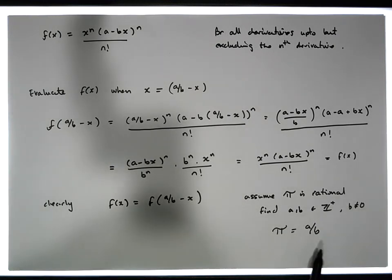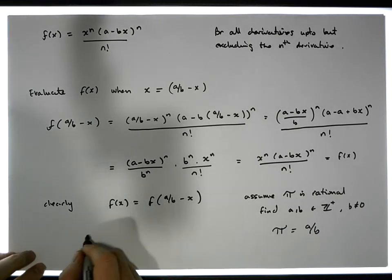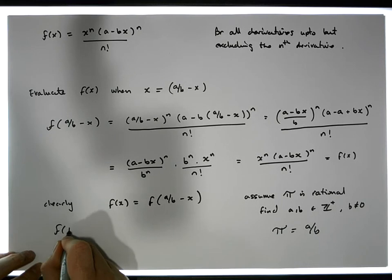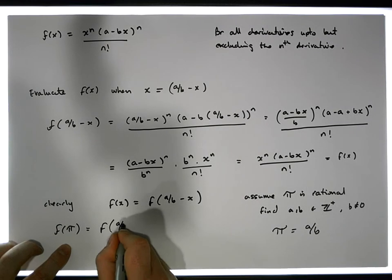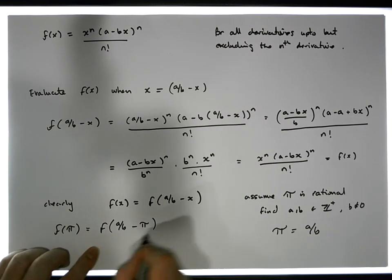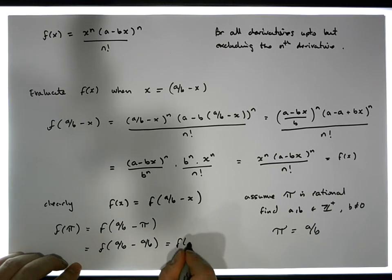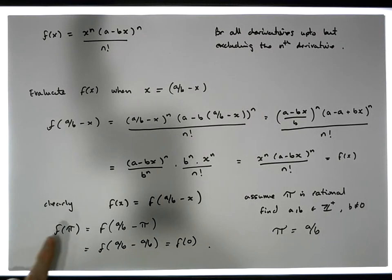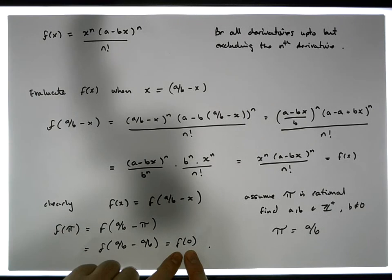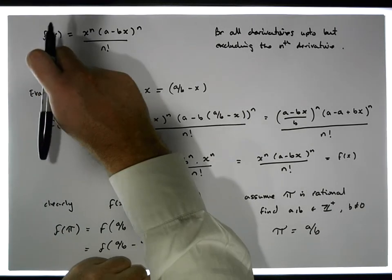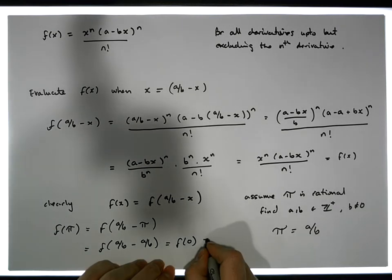Now look what happens. We end up with f(π) — and don't forget π is a/b — being equal to f(a/b minus π), which is f(a/b minus a/b), which equals f(0). So f(π), evaluated at π when we assume π equals a/b, is actually the same as f(0). And we know that this function evaluated at zero is actually equal to zero.